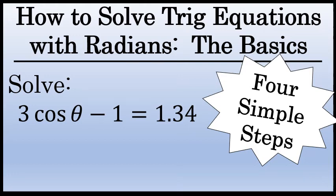In this video, I'm going to solve the trig equation 3 cosine theta minus 1 equals 1.34 in four steps.